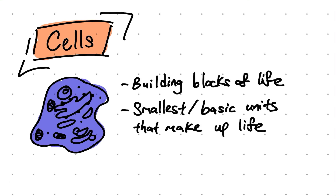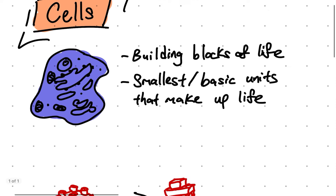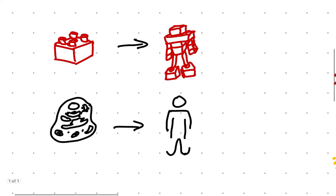Cells are the building blocks of life, and the smallest or basic units that make up life. Think of a cell as a Lego brick. With many Lego bricks, you can make a bigger structure with it. The same goes for the cell — with many cells, you're able to form a multicellular organism.